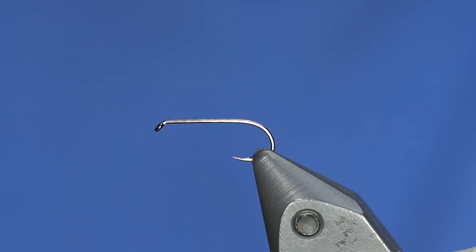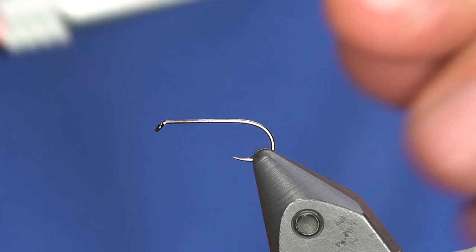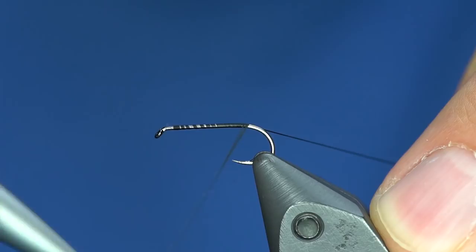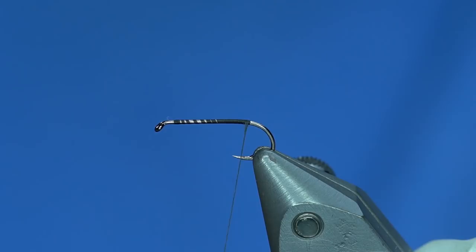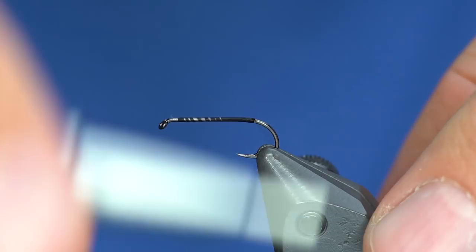I'm doing this on a 12. I've done these all the way down to a 16 and they work really well. Anyway, I'm just going to take some black 72 denier thread and wrap. I'm going to dress the whole hook and I'm going to take some episode foam and kind of tie it in.